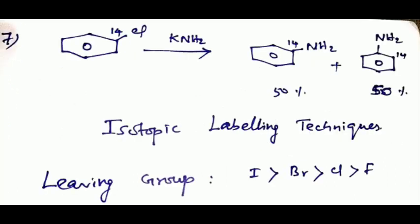The seventh example involves isotopic labeling techniques. If we have a labeled group at a specific position marked with a star, the nucleophile attacks and we get a product. If the star is at the original position, the product is an ipso product. If the nucleophile attacks the adjacent position, the product is a cine product — demonstrating the isotopic labeling technique in the benzyne mechanism.